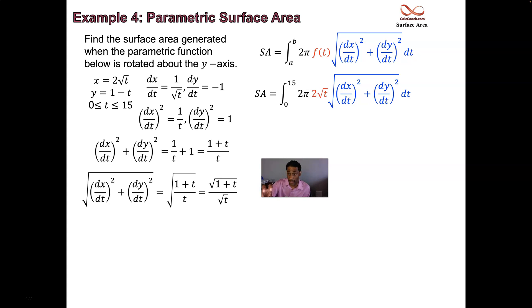That's going to be taking the place of that radical in our formula, and magic happens. The √t that was part of our radius formula from the x, and the √t, which is the denominator of our ds, they cancel out. Magic.